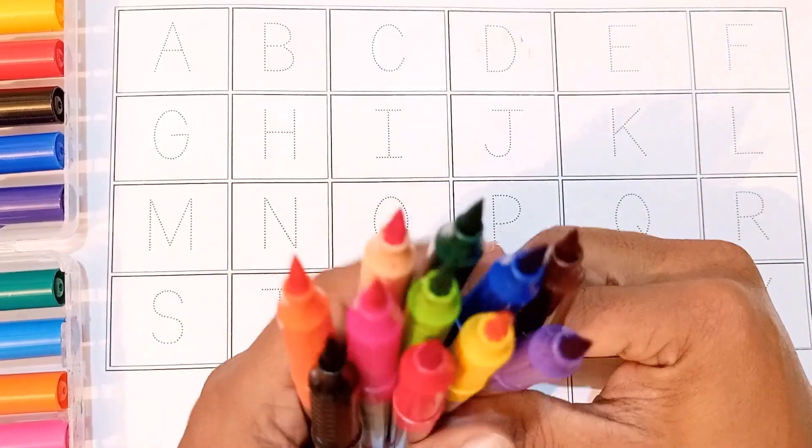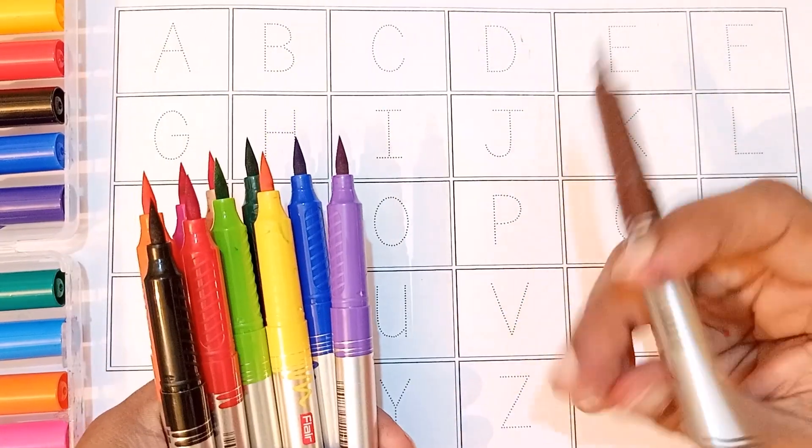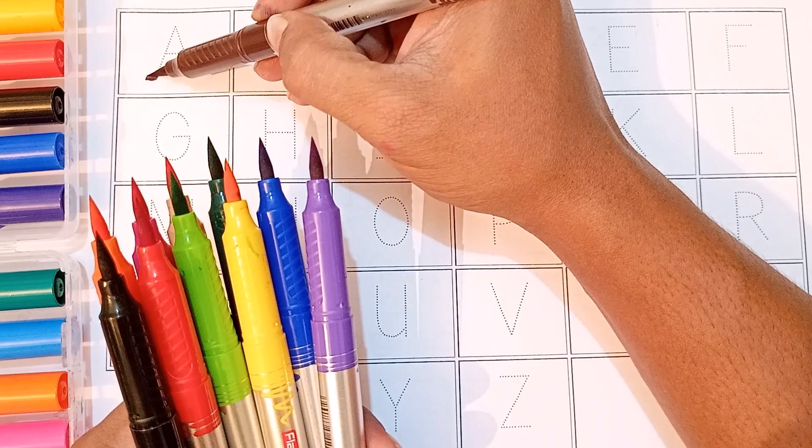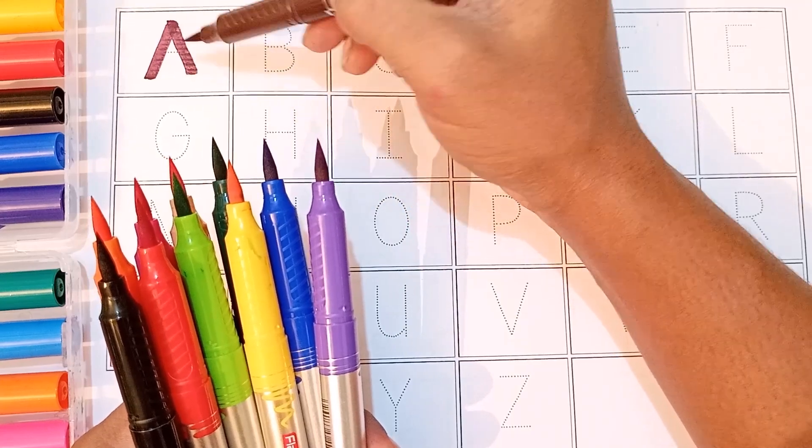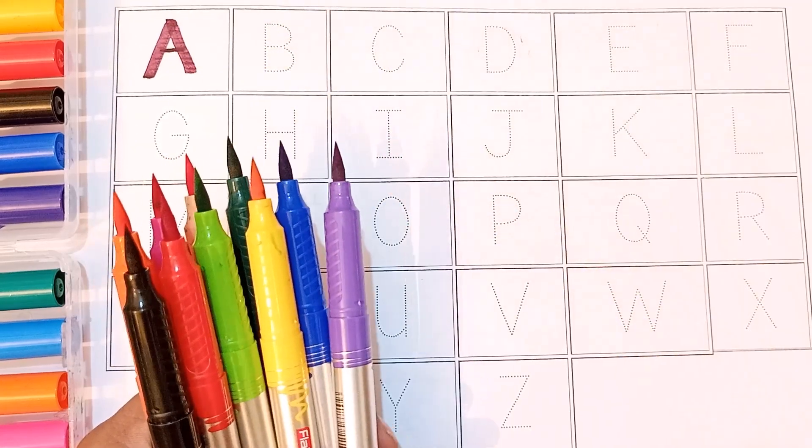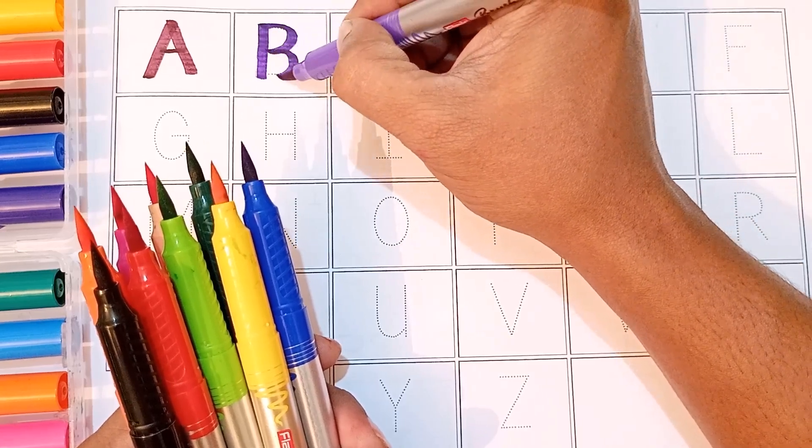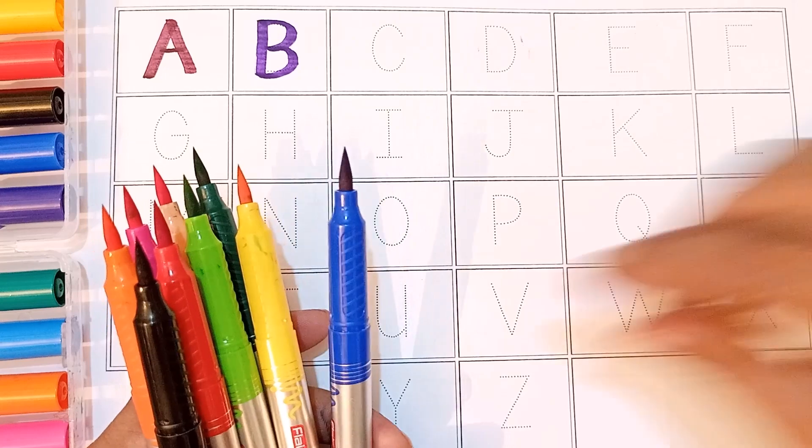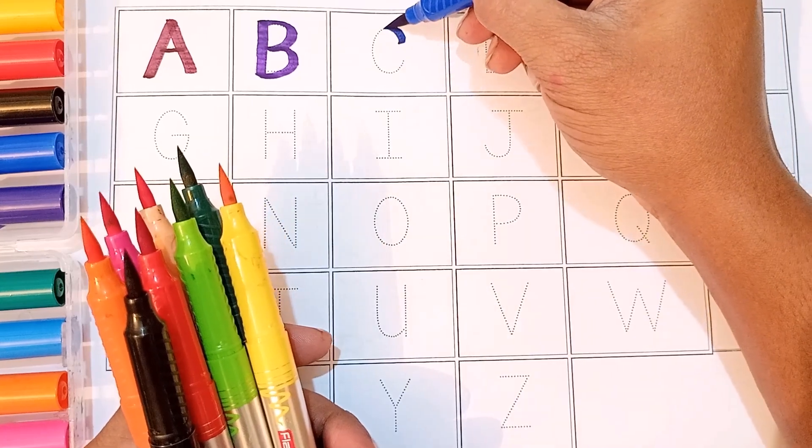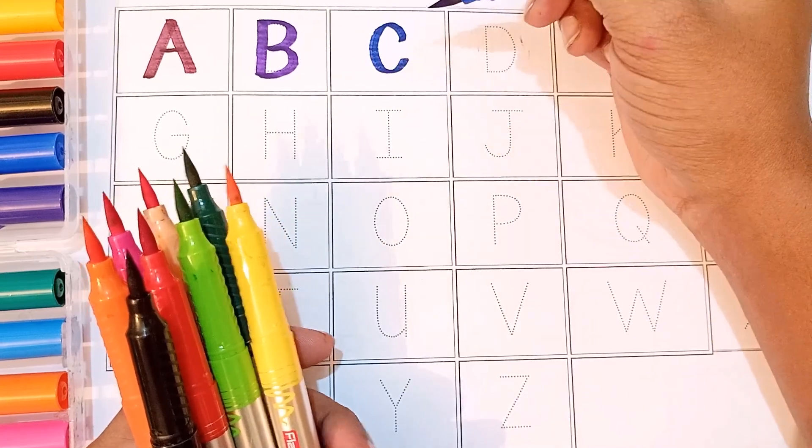A, A for aeroplane. A for aeroplane. B, B for baby. B for baby. Wow! B for baby. A for gorilla. C, C for coconut. C for coconut. Wow, C for coconut.